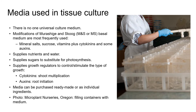Before moving on to stage two, let's talk about the media used in tissue culture. The medium supplies nutrients and water to the plant tissue whilst it's in culture, just as soil does for field grown crops. However, the big difference is that the medium in tissue culture also provides sugars as a substitute for photosynthesis, because plants in tissue culture aren't capable of doing their own photosynthesis. The media also contains plant growth regulators to control the type of growth that's needed. Cytokinins are added to promote shoot growth and auxins are added to promote root growth. Cytokinins are added to a gel-like agar base that's thick enough to hold plant material in place but porous enough to allow gaseous exchange.